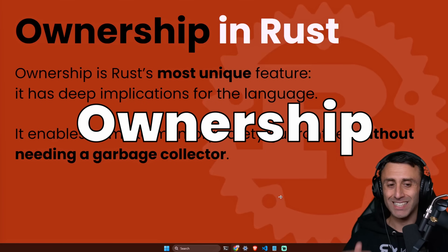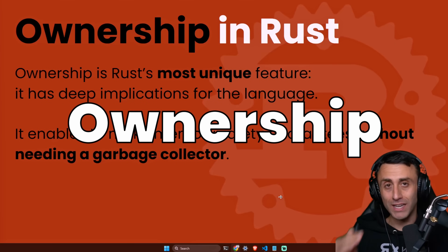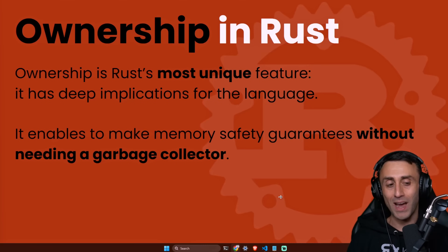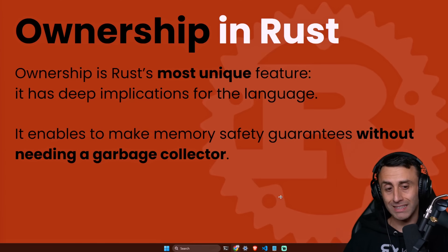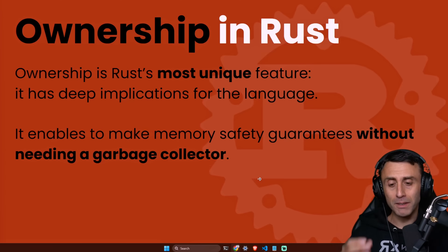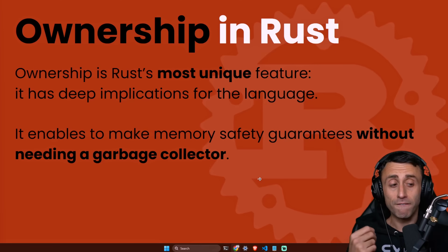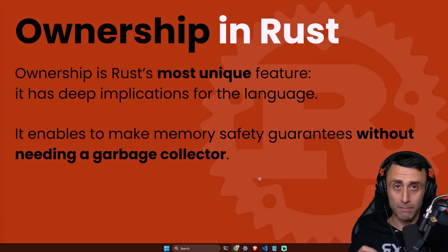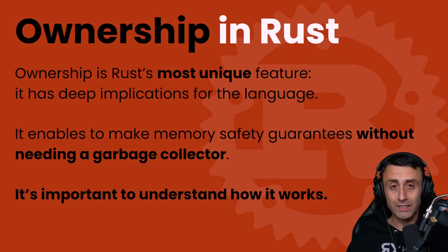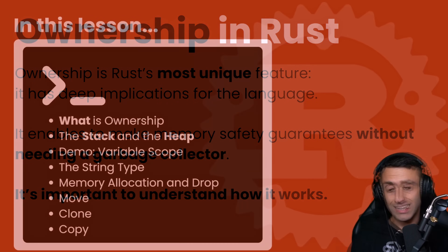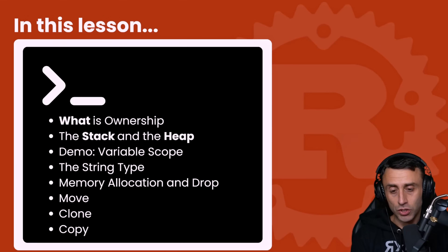Ownership is Rust's most unique feature and one of the reasons why I decided to learn Rust. This has very important implications for the language. Ownership enables Rust to have memory safety features without needing a garbage collector, and it's very important to understand how it works to proceed with further lessons.